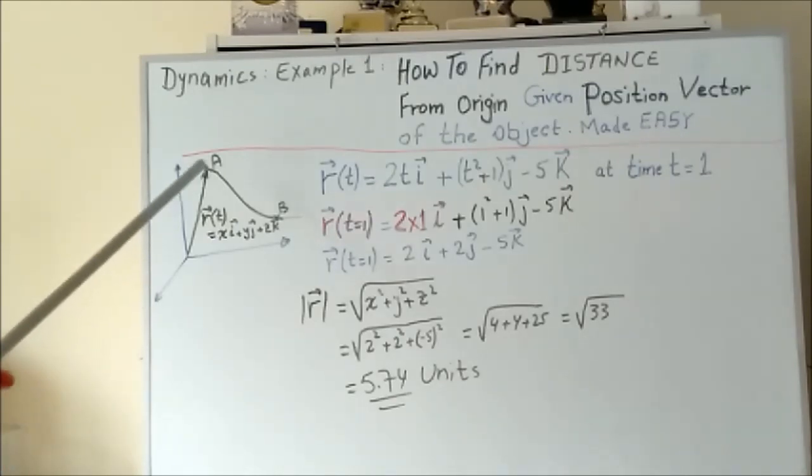So the distance of object A from the origin is 5.74 units. Thanks for watching, please subscribe.